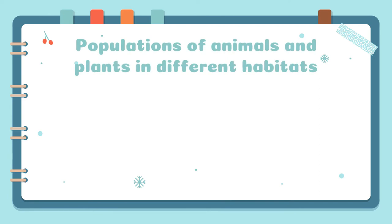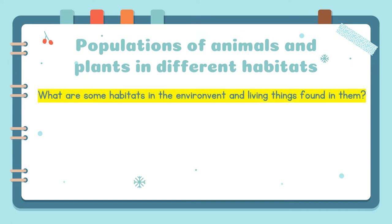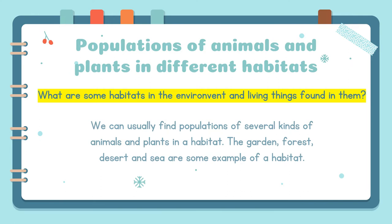Populations of animals and plants in different habitats. What are some habitats in the environment and the living things found in them? We can usually find populations of several kinds of animals and plants in a habitat.